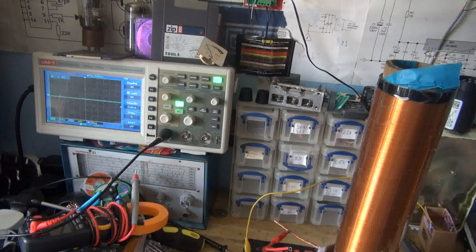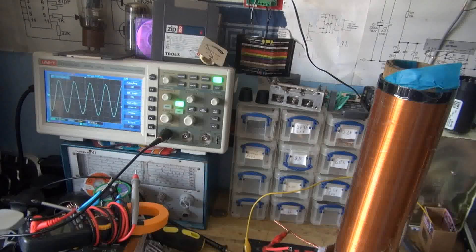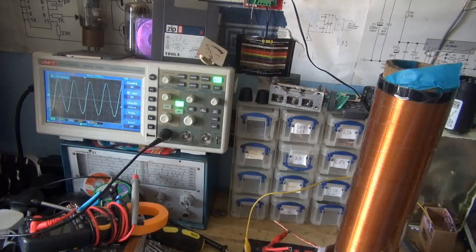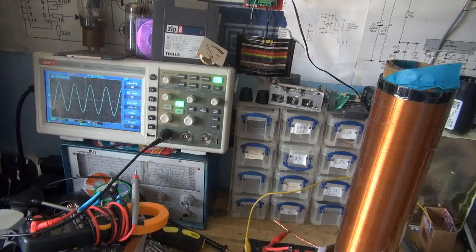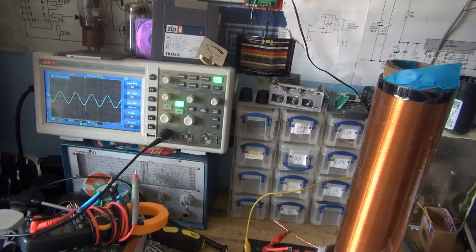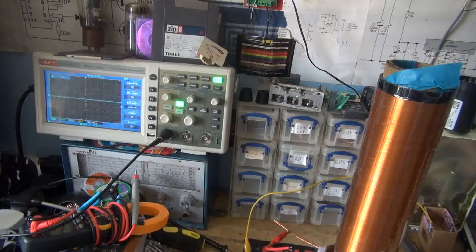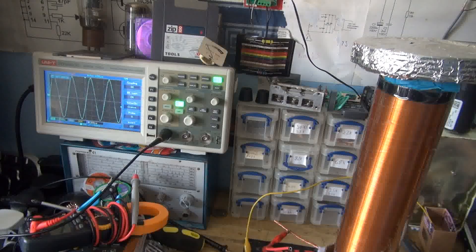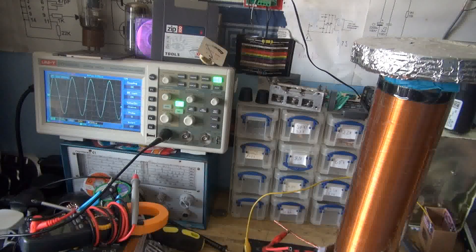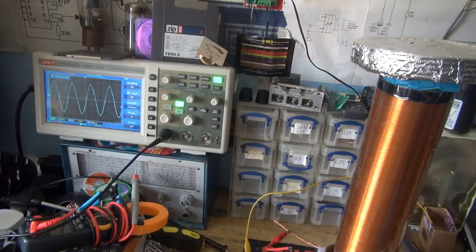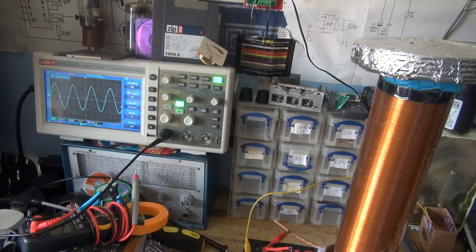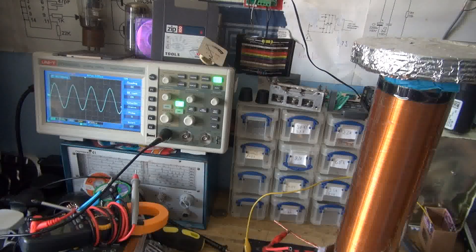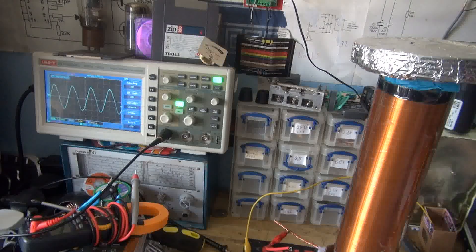So this is with no top load, and we have about 767 kHz. Alright, I'm going to write that down. 767 kHz. And I'm going to stick one top load on it. Now it's pulling a lot of power. I'm going to reduce the supply voltage. So 651 kHz with one top load.